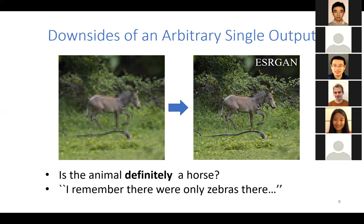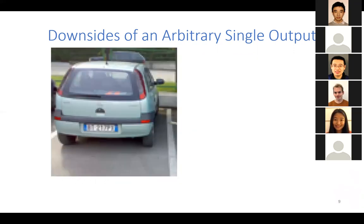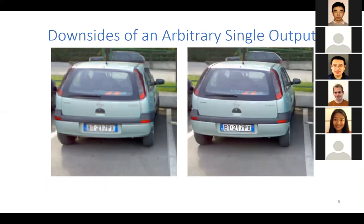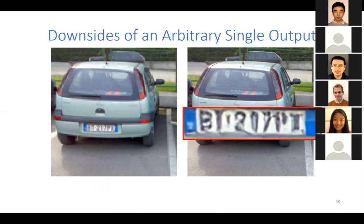Moving to an example from the domain of forensics: let's say we have a low-resolution image of a suspicious car and we are interested in the number on its license plate. We can feed it to EDSR-GAN and get a much nicer result, then zoom in to the license plate. But we have no way of saying whether the central digit can be a zero or a seven — we cannot evaluate the likelihood of any of the options.